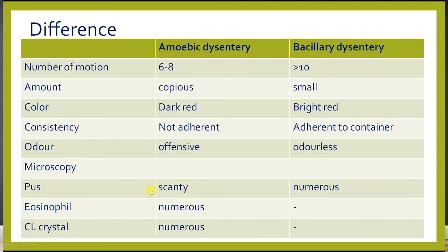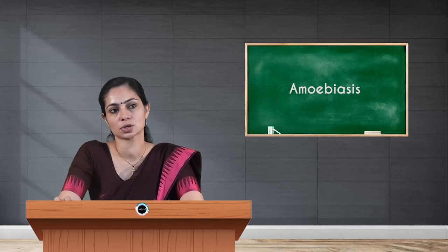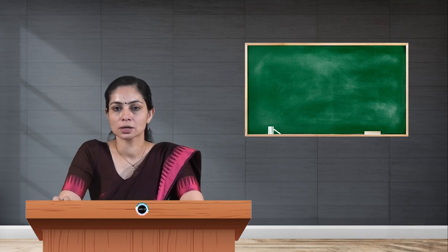For liver abscess diagnosis, the sample is pus, which shows trophozoites on microscopy. Stool culture, antigen or antibody detection by ELISA, histopathology staining, PCR, and ultrasonography at the abscess site are also used. Prevention involves preventing contamination of water, avoiding feco-oral contamination through personal hygiene, and health education. Treatment is given with metronidazole or IV electrolytes.